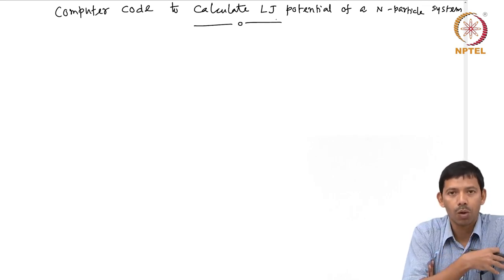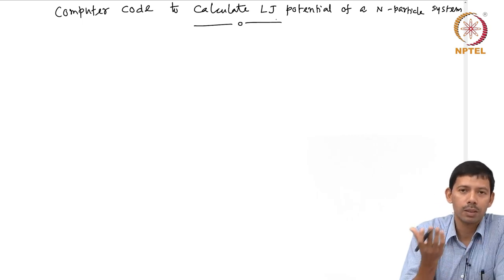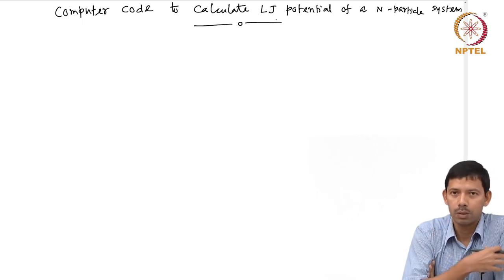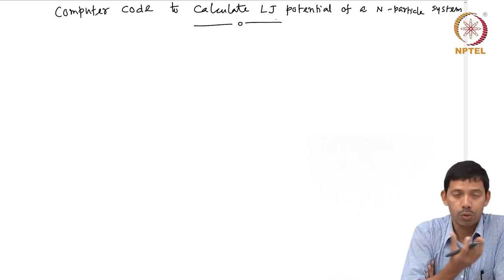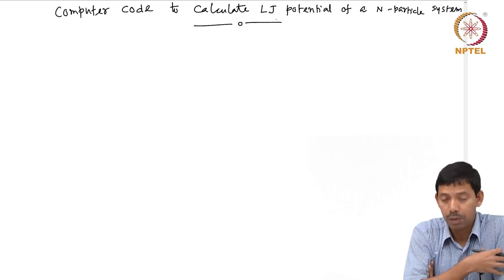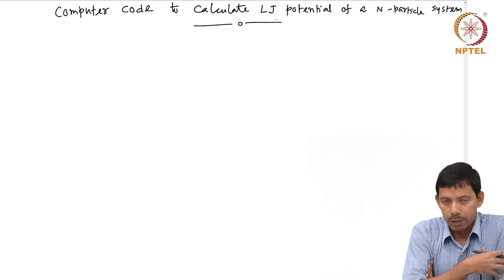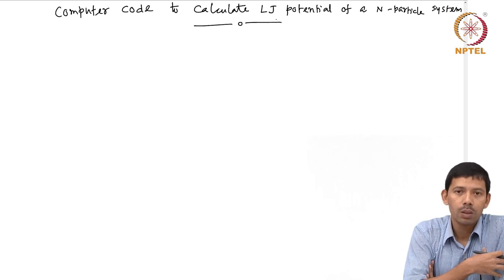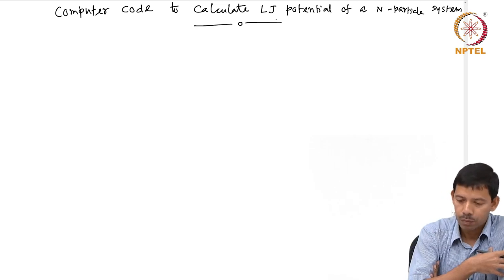I will be presenting you the logic and then you can write it in your own language — C, C++, Fortran 90, and so on. We have an n-particle system and we want to find out the Lennard-Jones potential.